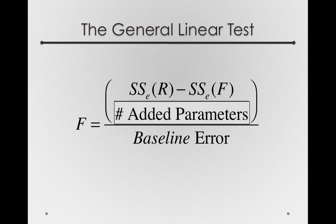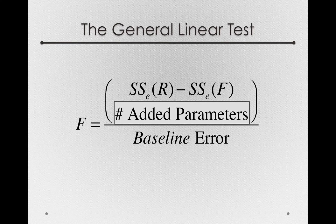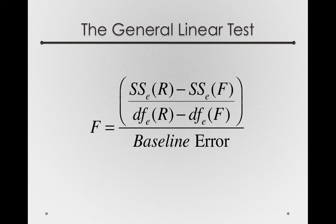Next, let's talk about the number of parameters added. The reduced model will always have fewer parameters than the full model. So the difference in degrees of freedom for the reduced and full models captures the number of added parameters we have. We can write this as the degrees of freedom error for the reduced model, which will be larger, minus the degrees of freedom error for the full model.